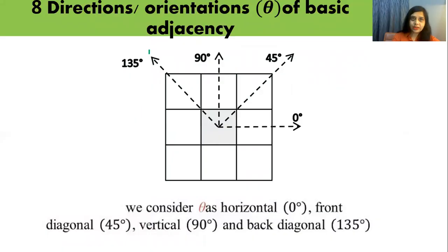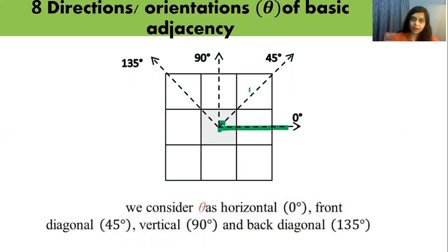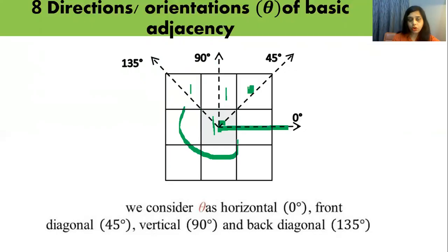There are eight directions of orientation for theta. If we take the horizontal orientation, we call it theta equal to zero. If we take a diagonal pair, theta equals 45 degrees. If we consider a vertical pair, theta equals 90 degrees. And theta equals 135 degrees for the other diagonal direction, and so on.